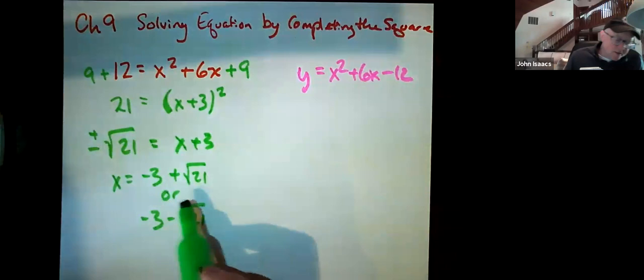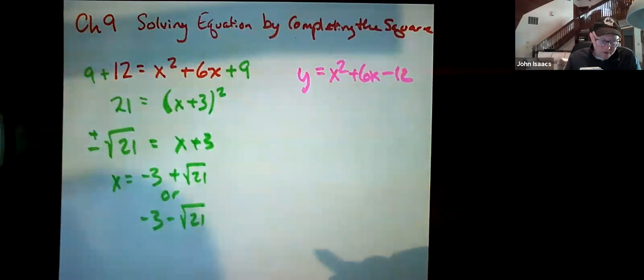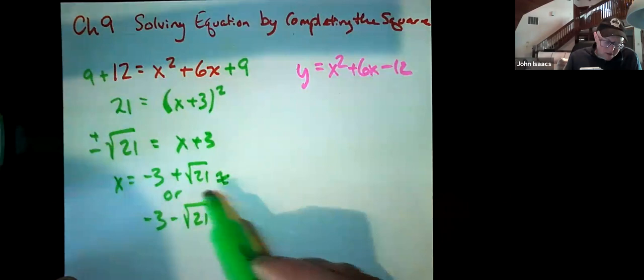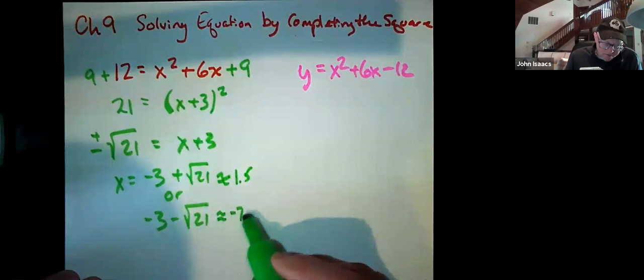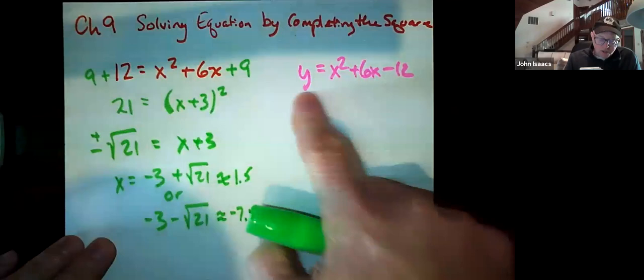Now think of this root 21 is, well, 21 is in between 16 and 25, so it's about four and a half. So if we add four and a half to negative three, we wind up with about one and a half. And if we subtract four and a half from negative three, we get about negative seven and a half. Those are your two solutions to this equation if y is equal to zero.